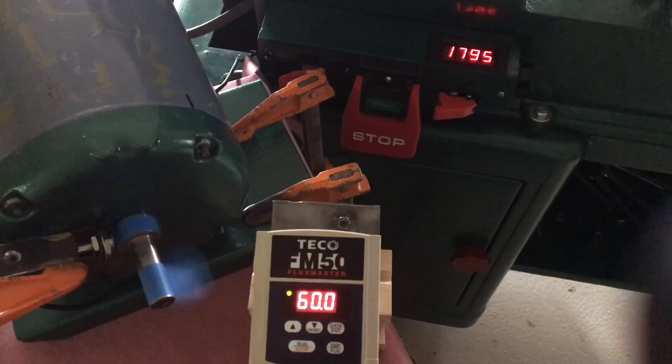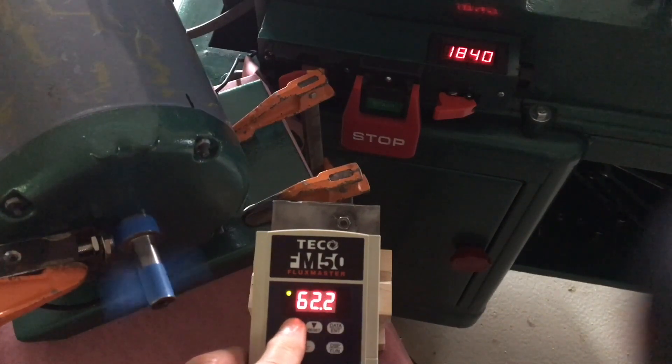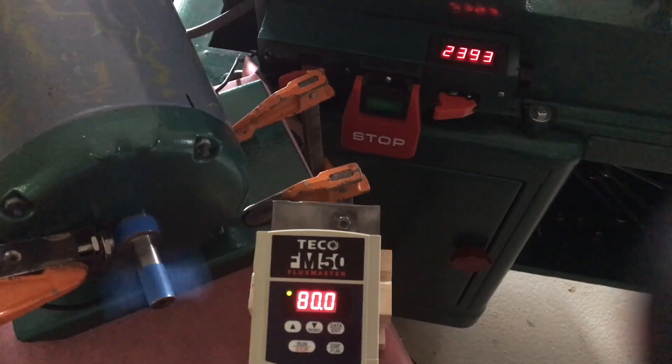So here we are at 60 hertz again, 1800 RPMs on the motor. Now I'm just running it up to the maximum that I've got set, which is 80 hertz. And now you can see it's almost 2400 RPMs on the motor.